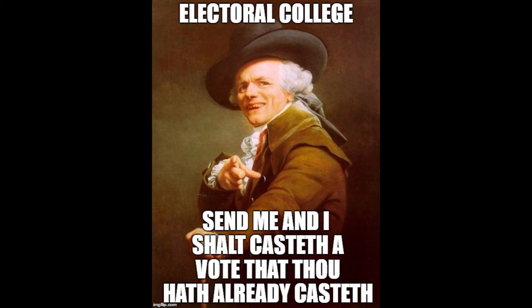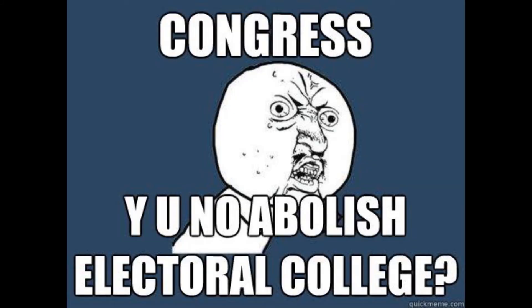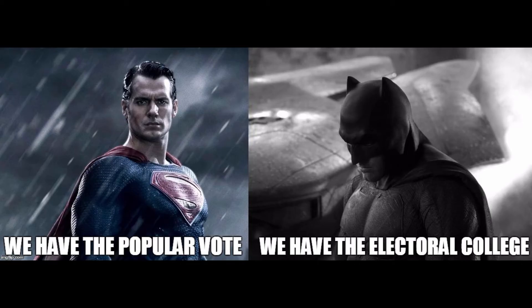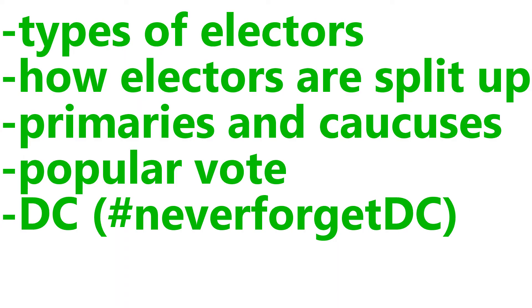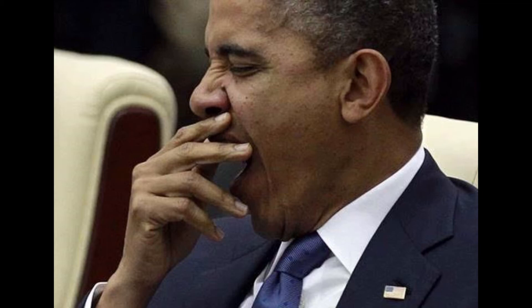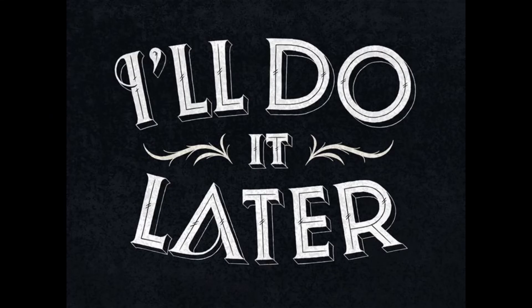So there you have it. The electoral college is a complex enigma as old as the Constitution itself. Many people I spoke with wondered why we had such a confusing system in place, and why we didn't just use a simple popular vote. Both systems have their own positives and negatives. I wanted to include more information about the types of electors and the way electors are split up, and more details on the election process itself, but that would be too much for one video — so we can talk about it at a later time.